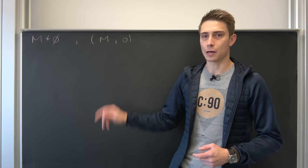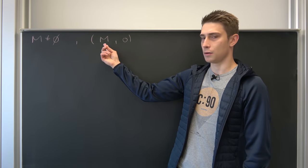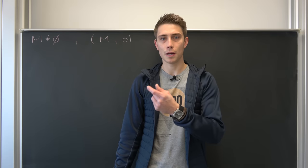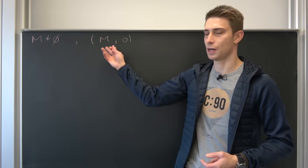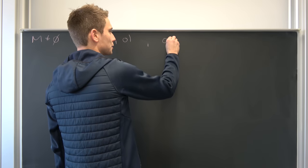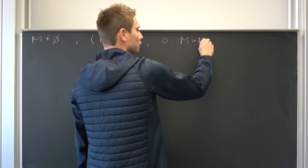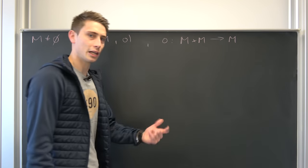You might ask yourself what is a binary operation. Well it just means we are going to take two elements out of this set, use the operation on it and it's going to map those two elements with the operation onto a single element of M. Meaning in mathematical terms we are going to define this composition, this circle, as just the Cartesian product of M with itself being mapped to a single element of M.